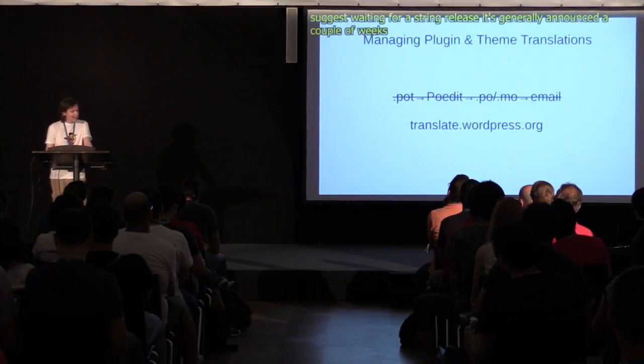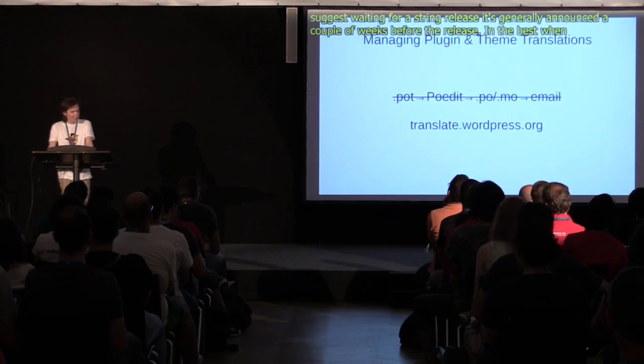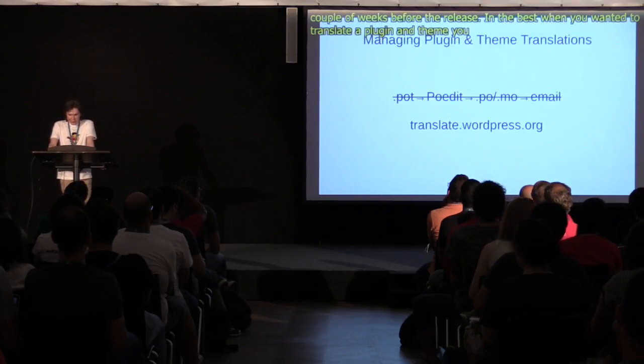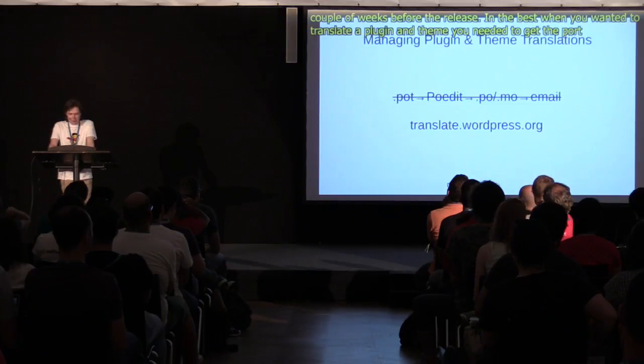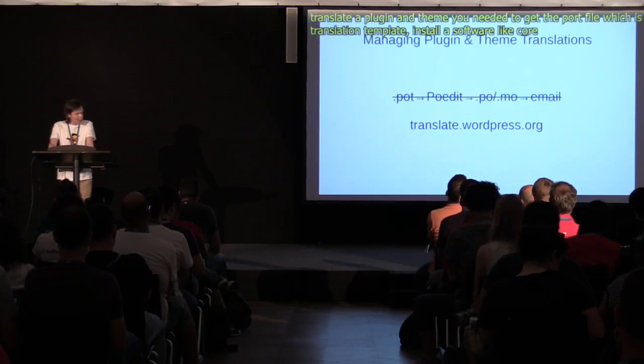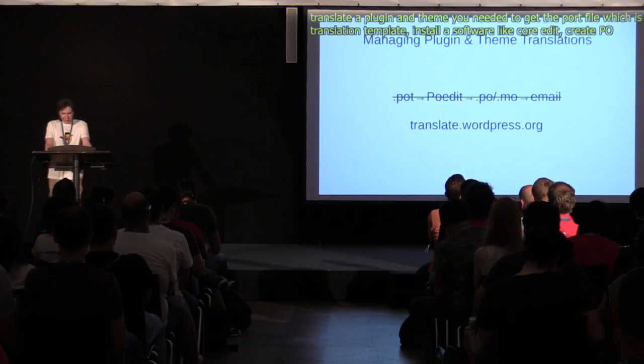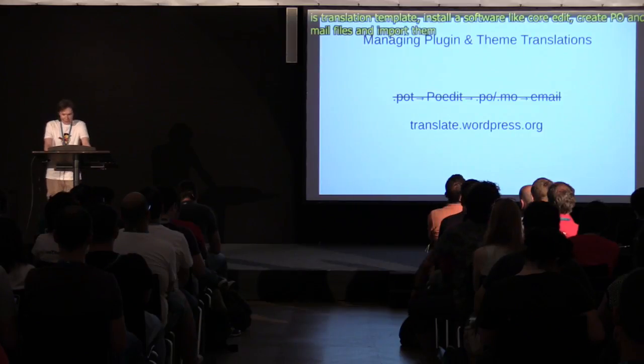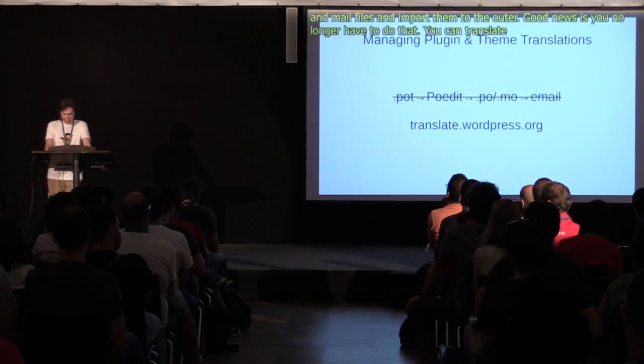In the past, when you wanted to translate a plugin or theme, you needed to get a POT file — which is a translation template — install software like PoEdit, create PO and MO files, and email them to the plugin author. The good news is that now you no longer have to do that. You can translate almost any plugin directly on translate.wordpress.org, which is powered by software called GlotPress. I say almost any plugin because some plugins might not be properly prepared for localization — in that case, you should report the issue to the plugin author.